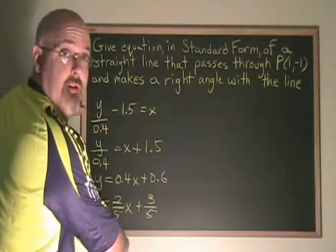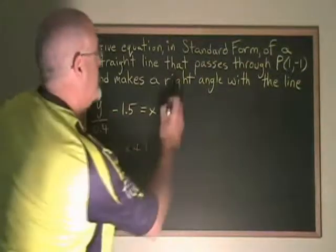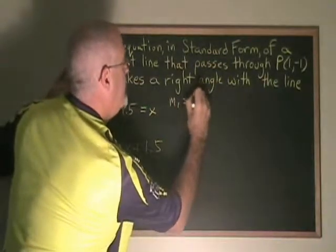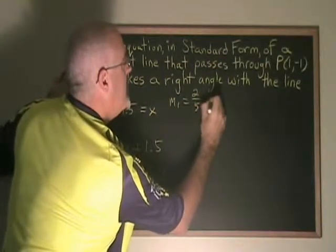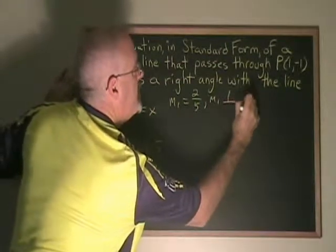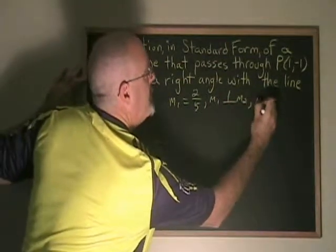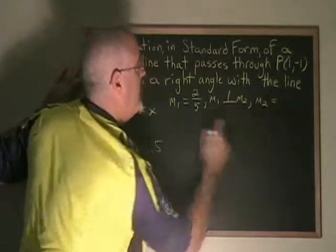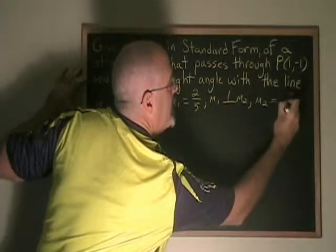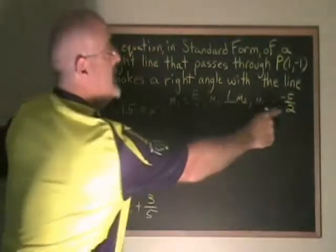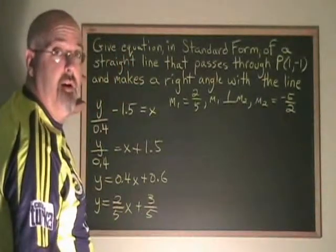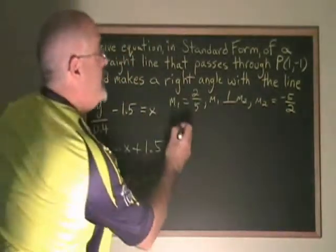The slope of the first line is 2/5. So in my justification, I write m1 equals 2/5. M1 is perpendicular to m2. Therefore, m2 must be equal to the negative reciprocal of 2/5, which is negative 5/2. I can use this slope and the point I know on the perpendicular line to find the equation.